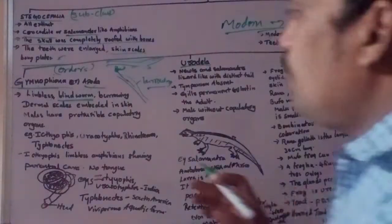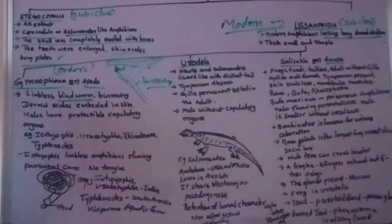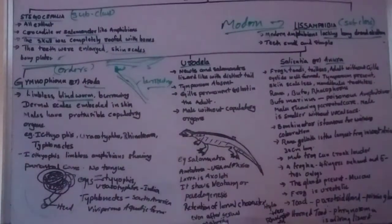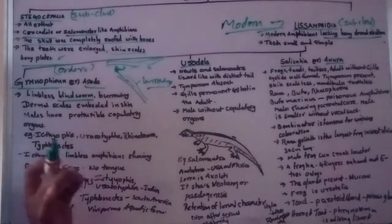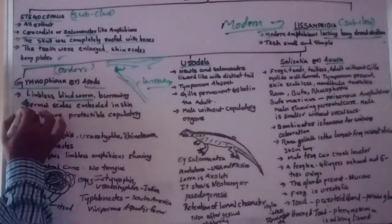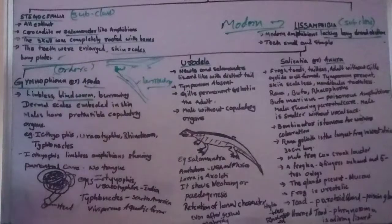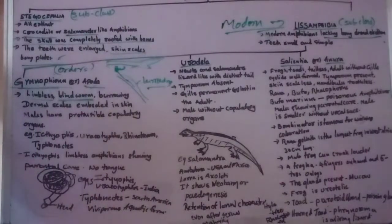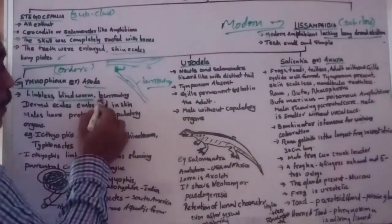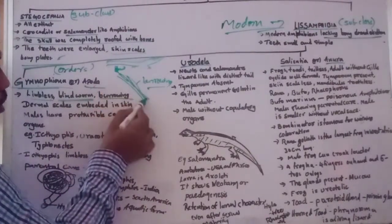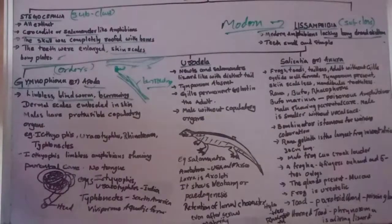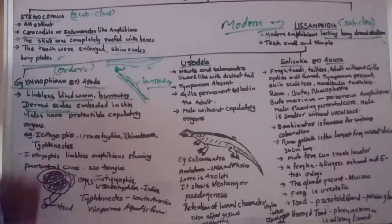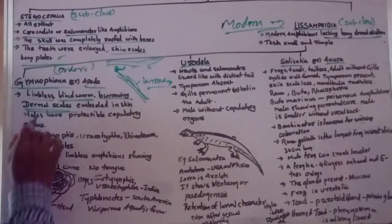These are also called Caecilians. The important points about Gymnophiona or Apoda: they are limbless amphibians, they don't have limbs, they are blind worms, and they live in burrows.